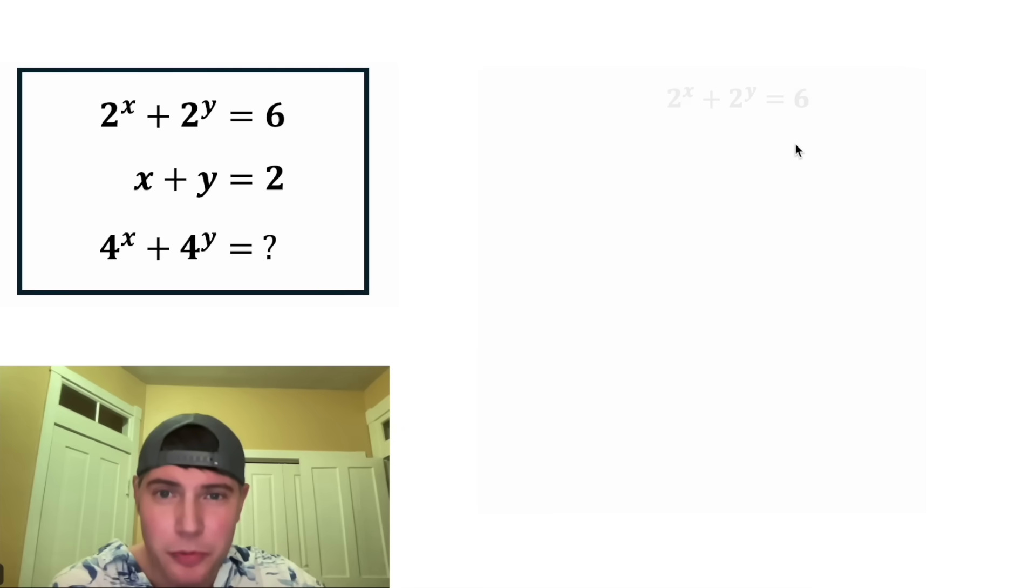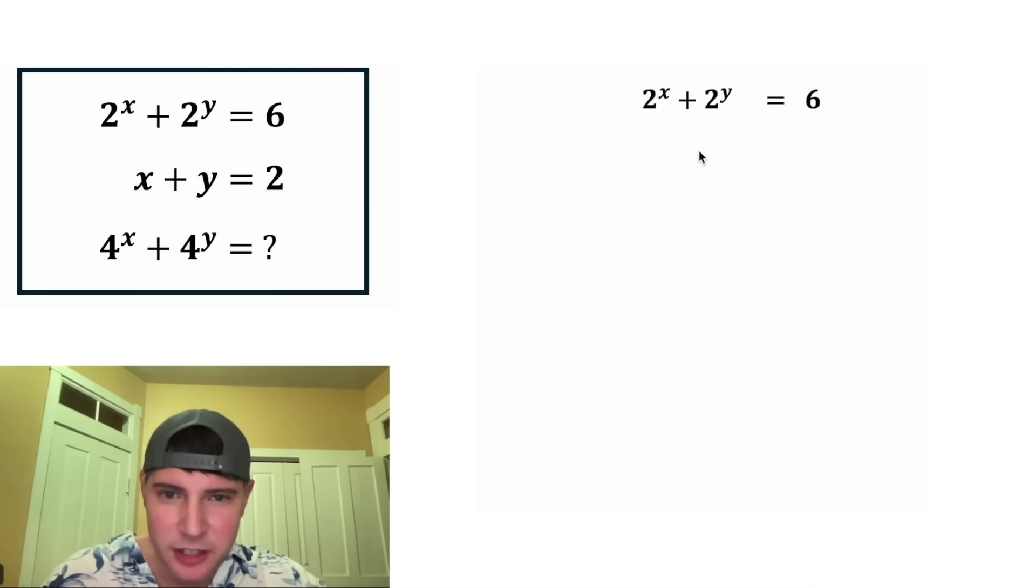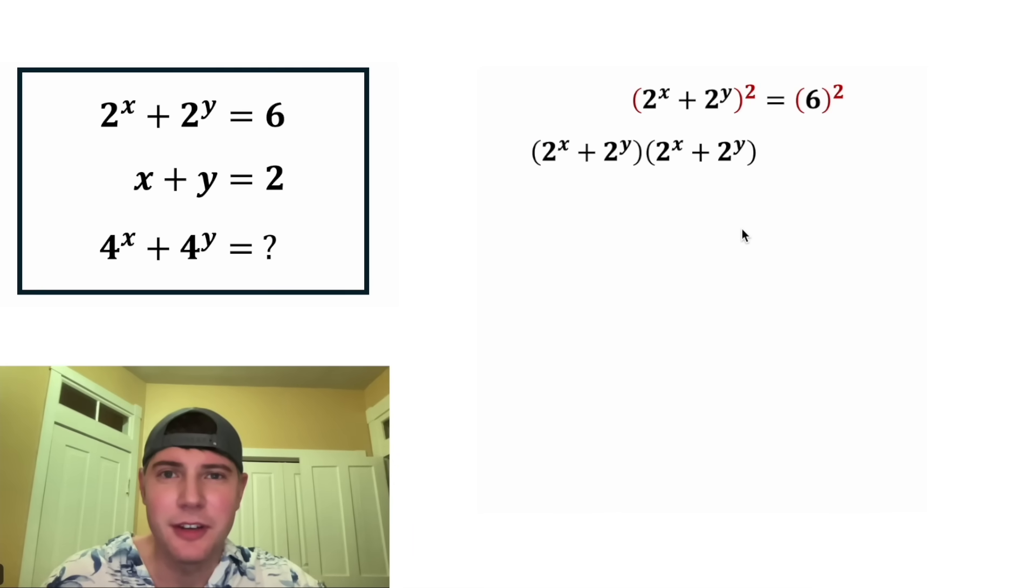First, let's copy down this top row: 2 to the x plus 2 to the y equals 6. And let's square both sides of the equation. On the left-hand side, this thing squared is equal to this thing times itself. And then on the right-hand side, 6 squared is 36.